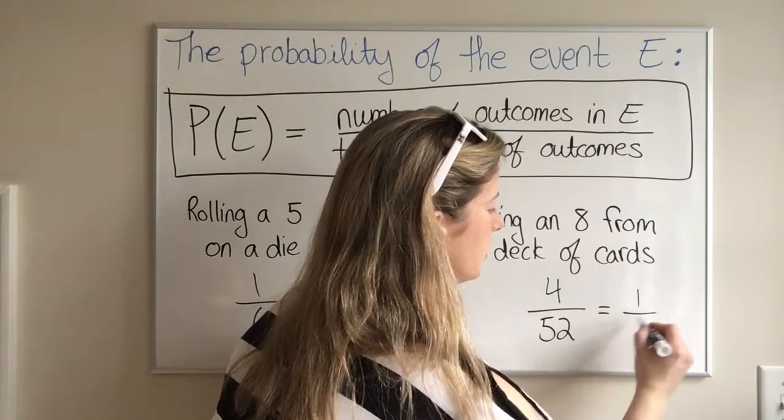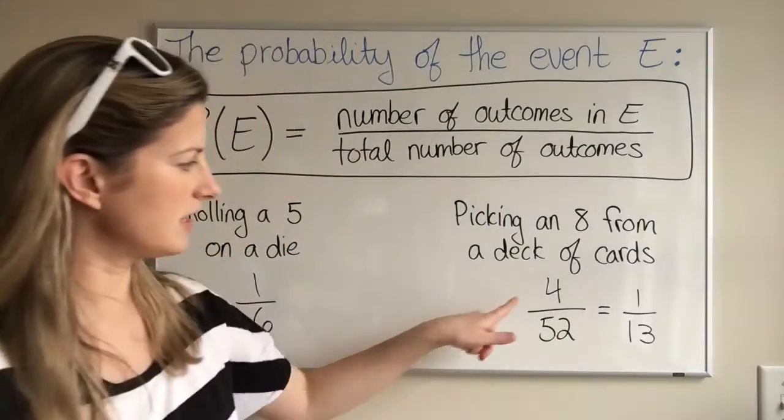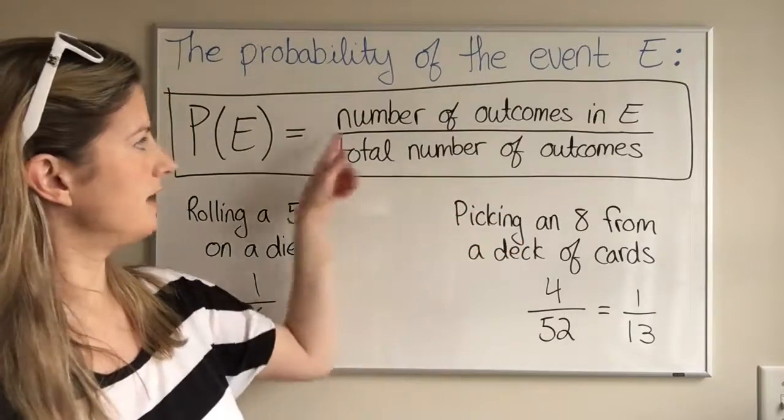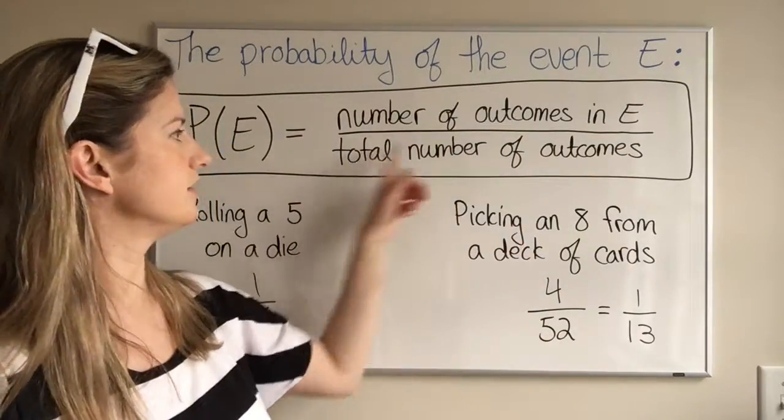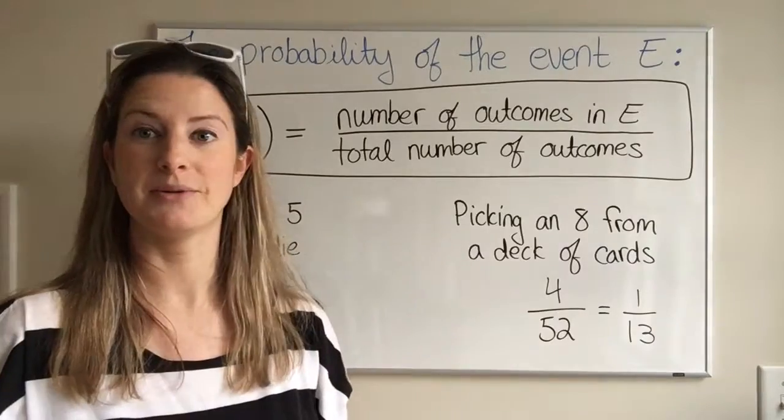This reduces to 1 out of 13. But if you think about the 4 out of 52, that helps you see this. The number of outcomes in E is 4, and the total number of outcomes is 52.